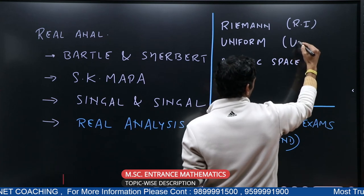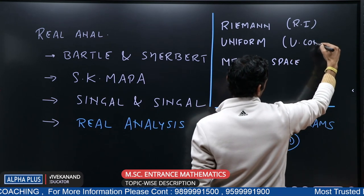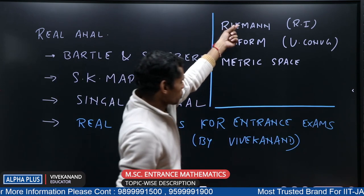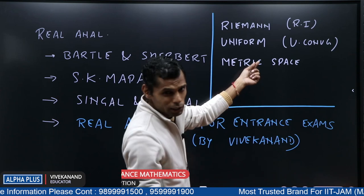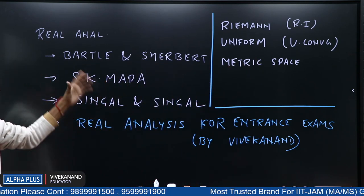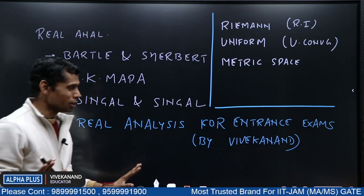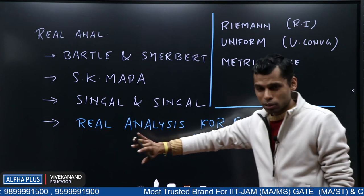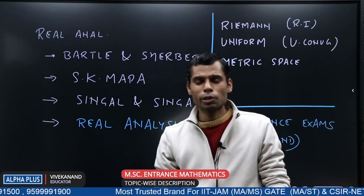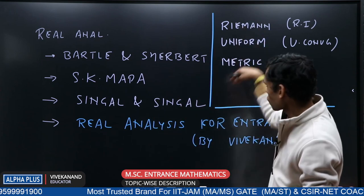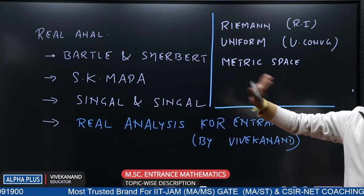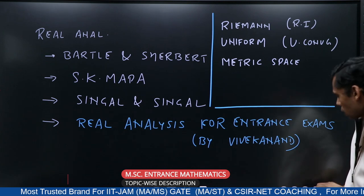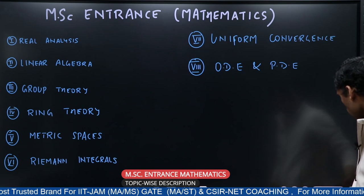Riemann integration, Uniform Convergence, and Metric Space are included. Bartle & Sherbert covers Riemann, Uniform Convergence, and Metric Space. For Sequence, Limit, Continuity, and Derivability, your understanding will be built very well, and all these topics are available in these books, so you don't need to do anything separately. This completes the entire real analysis part.